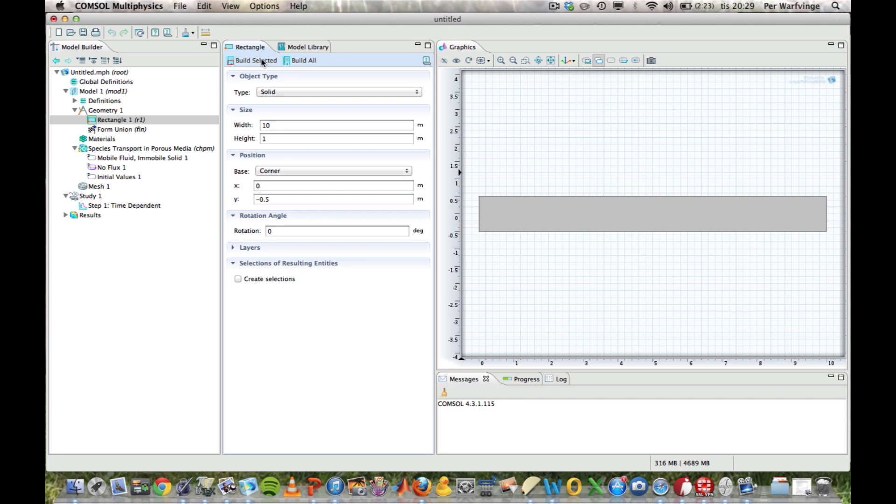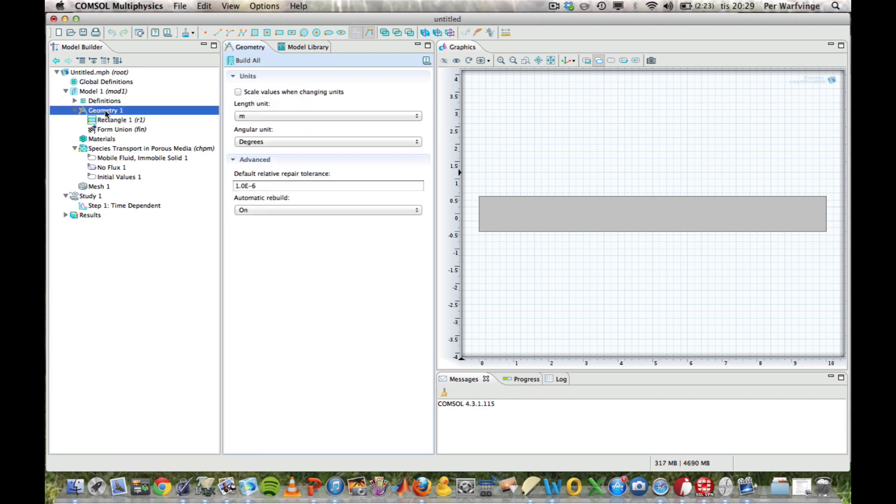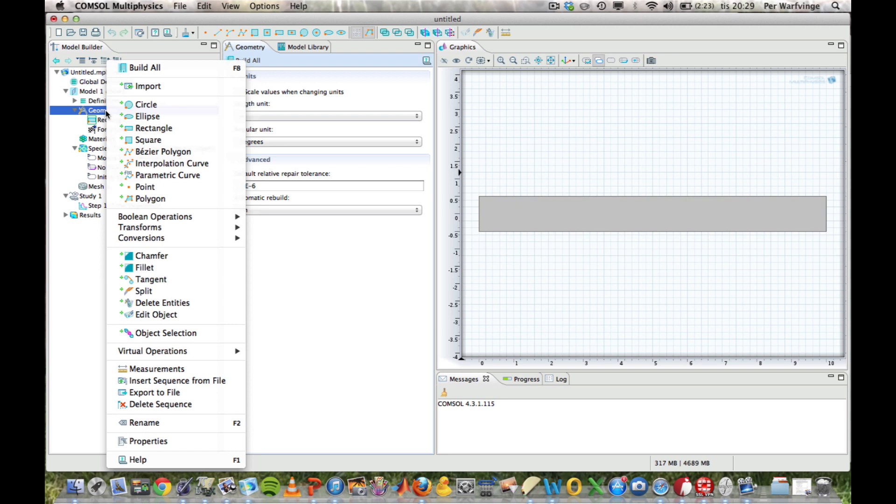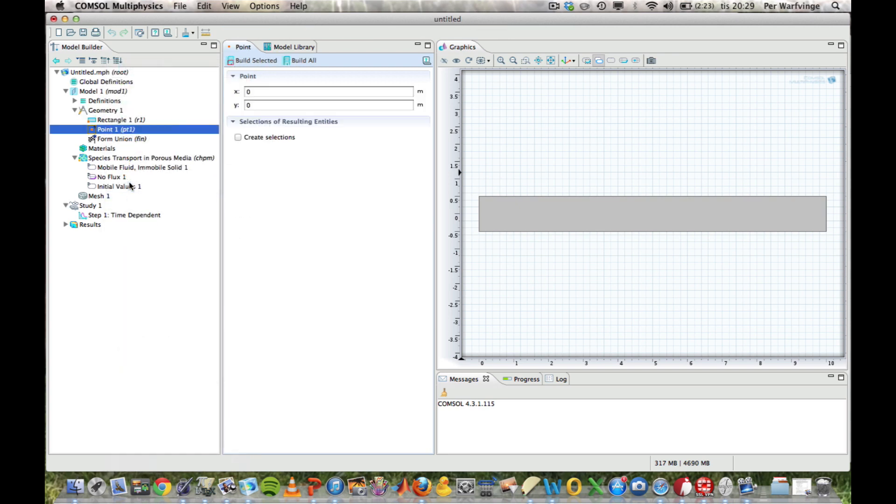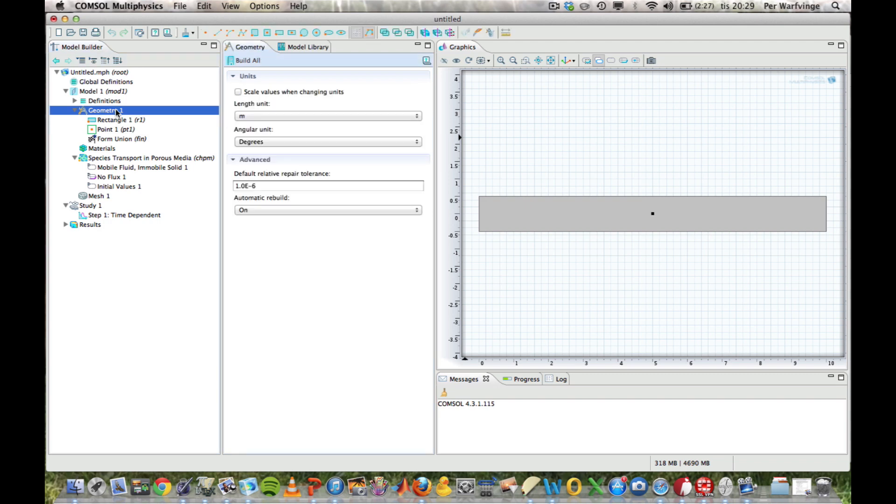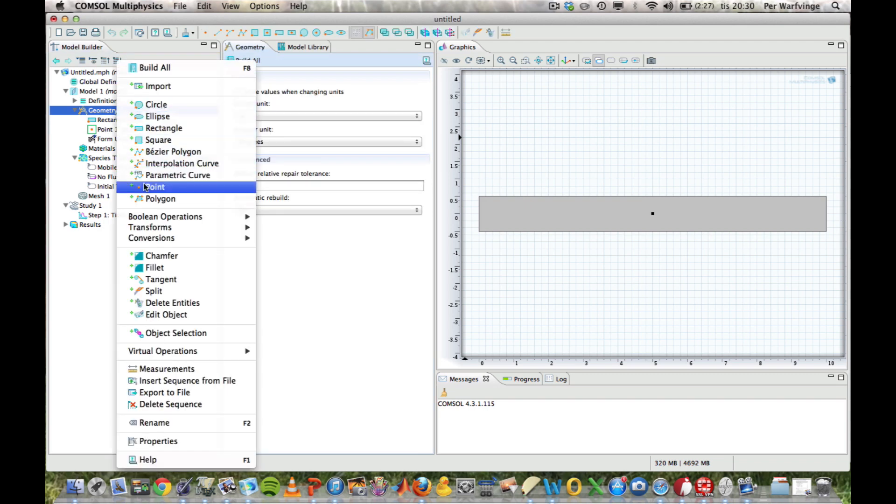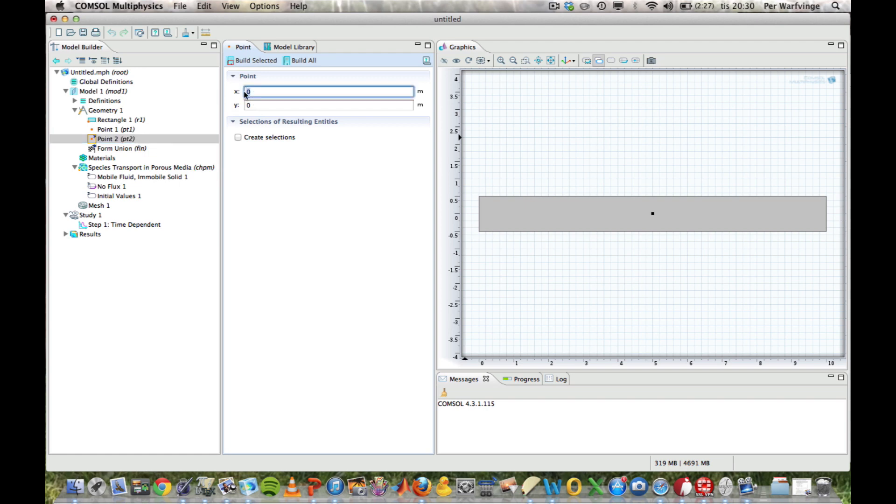Now I'm going to put out my measuring points. So, I select geometry, and right-click, select a point, and I'm going to put it over here. But I'm going to say that that is at 5, 0. Those are the coordinates. So, I build that one, and it shows up. And I'll make another one. A new point, and I'm going to put that at 9, and still with value 0. So, I build that one, and I have two points, and I have the rectangle. So, now I build them all together.